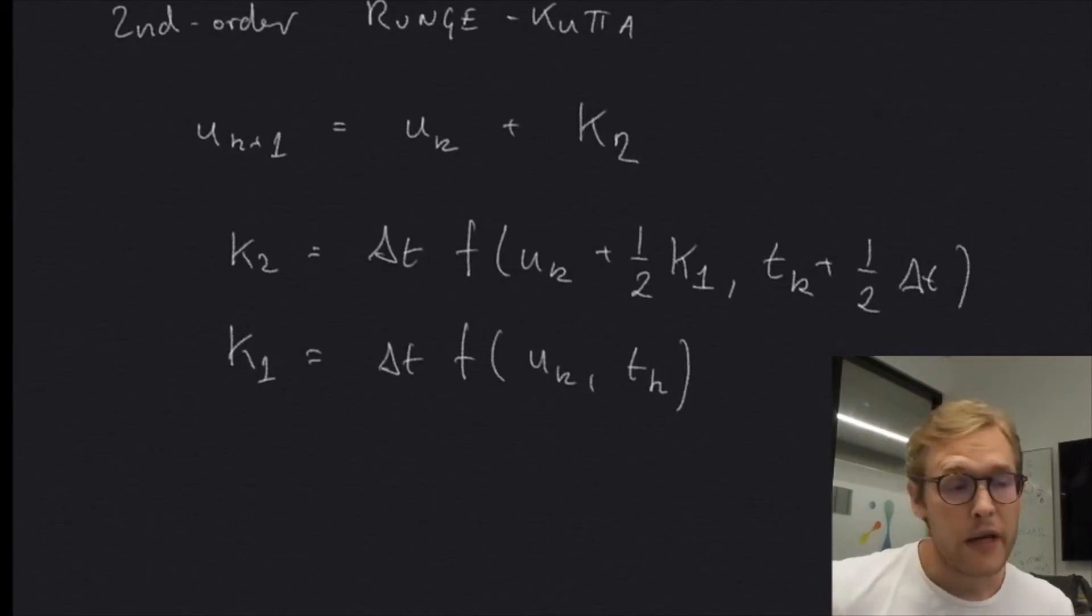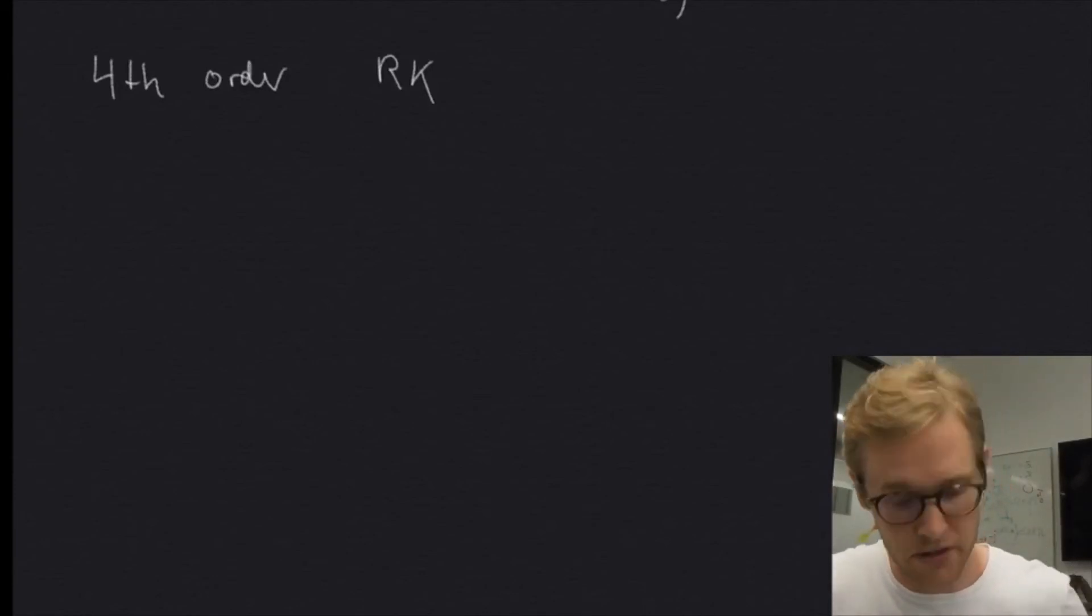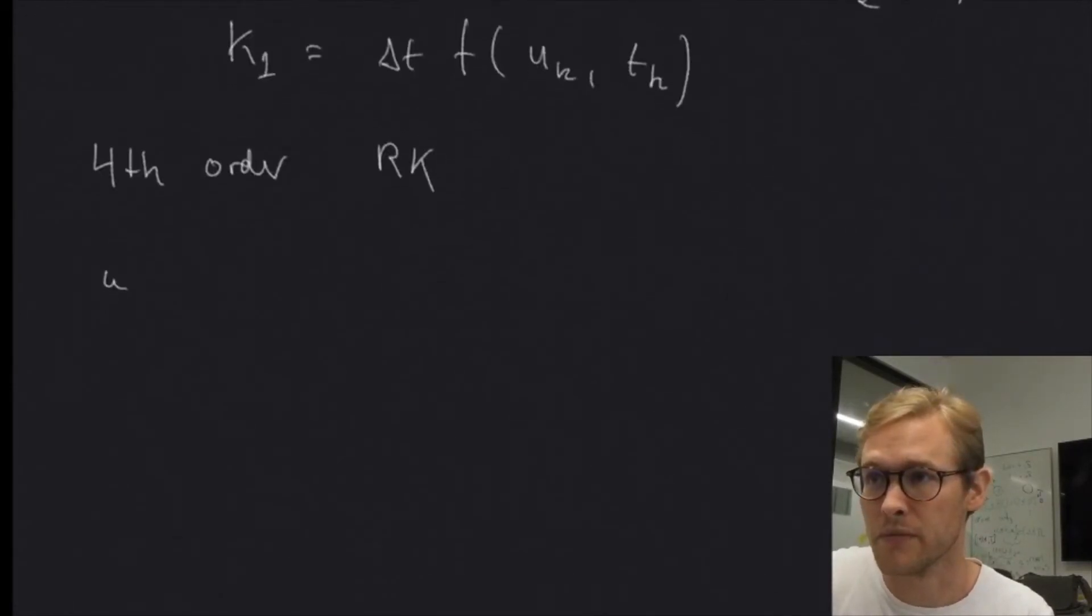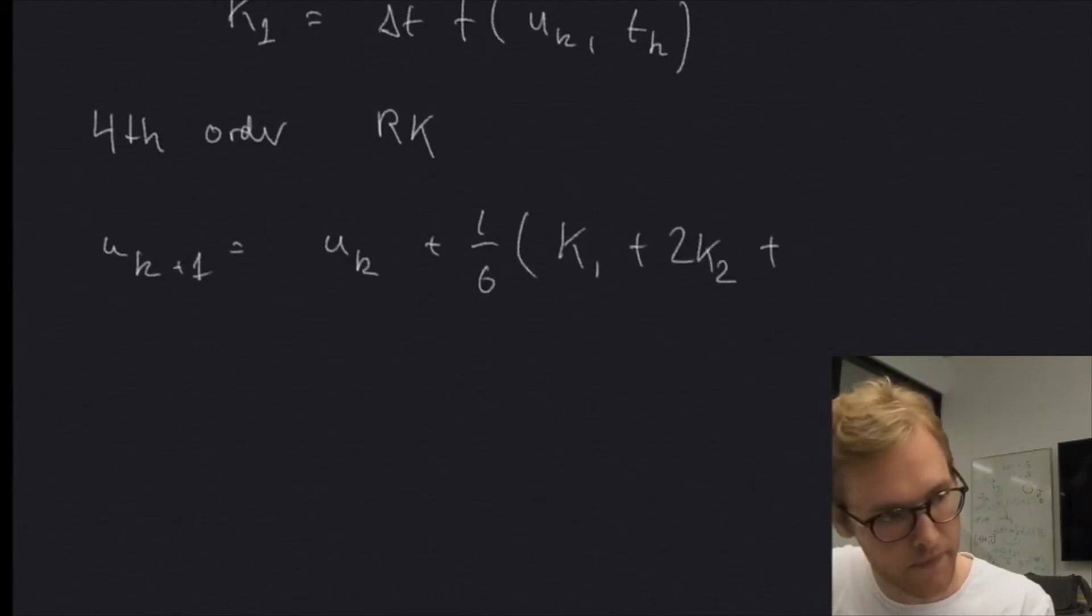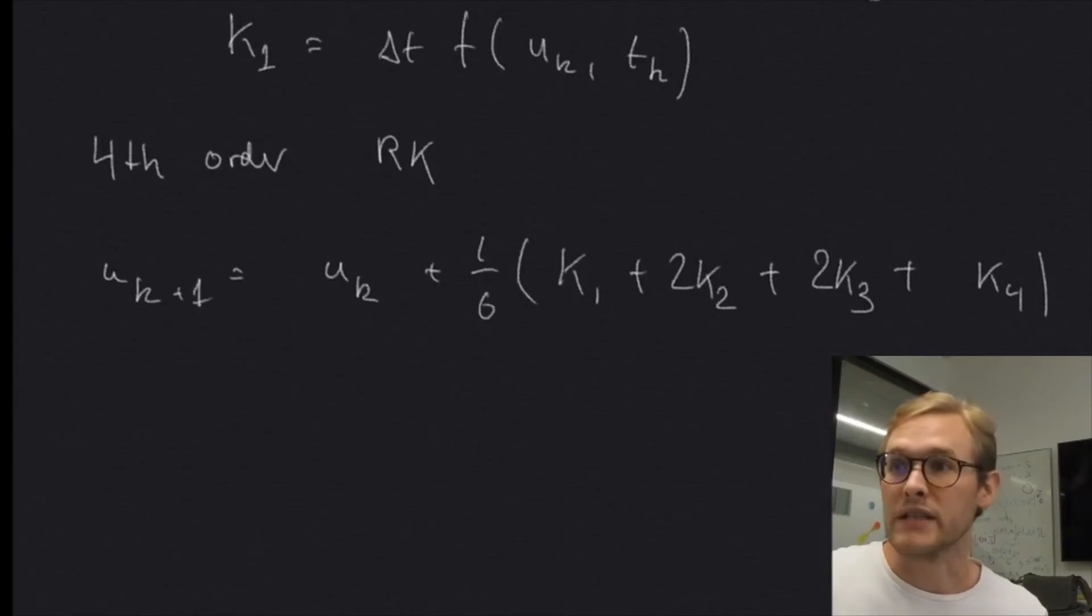And perhaps the most famous and most widely used method for solving ODEs is the fourth order Runge-Kutta method. So this is the fourth RK, usually just write RK. Because it's so popular, it's sometimes just called the Runge-Kutta method. And here we have four of these different K values instead of two of them. As in the second order method, so in the fourth order, we have UK plus one equals the current UK plus one sixth of all these K1 plus two of the K2 value plus two K3 and plus a K4 at the end. And all these, we need to define all of these K's, obviously.